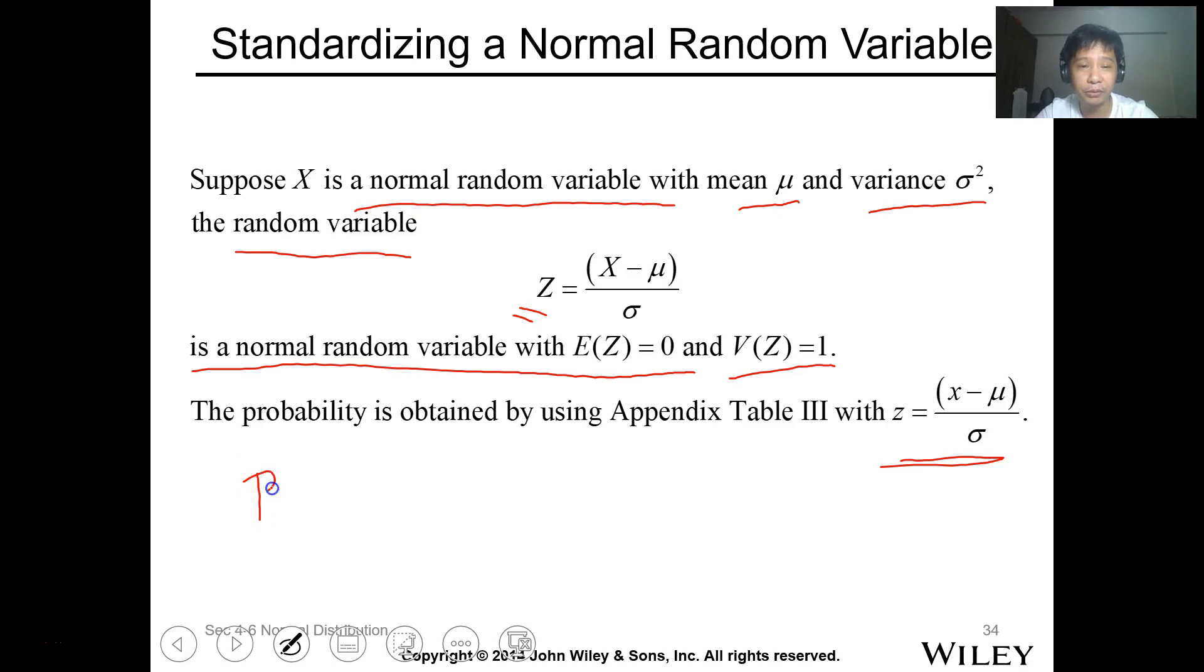So from x, the probability of x less than or equal to small x is just equal to the probability of capital Z less than small z. So where x will be transformed to z by this equation. When you have your z value, you can use your z table or the calculator for that.